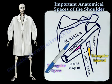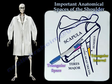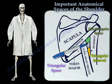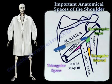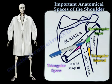And finally, the quadrangular space has boundaries which include the teres major, the humeral shaft, the teres minor, and the long head of the triceps.